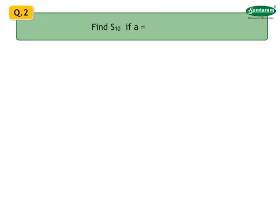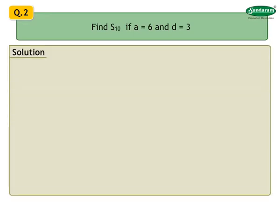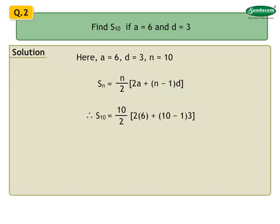Number 2: Find S10 if A equals 6 and D equals 3. Solution: Here A equals 6, D equals 3, n equals 10. We have Sn equals n/2 into [2a + (n−1)d]. Therefore, S10 equals 10/2 into [2×6 + (10−1)×3] equals 5 into [12 + 27] equals 5 into 39 equals 195.